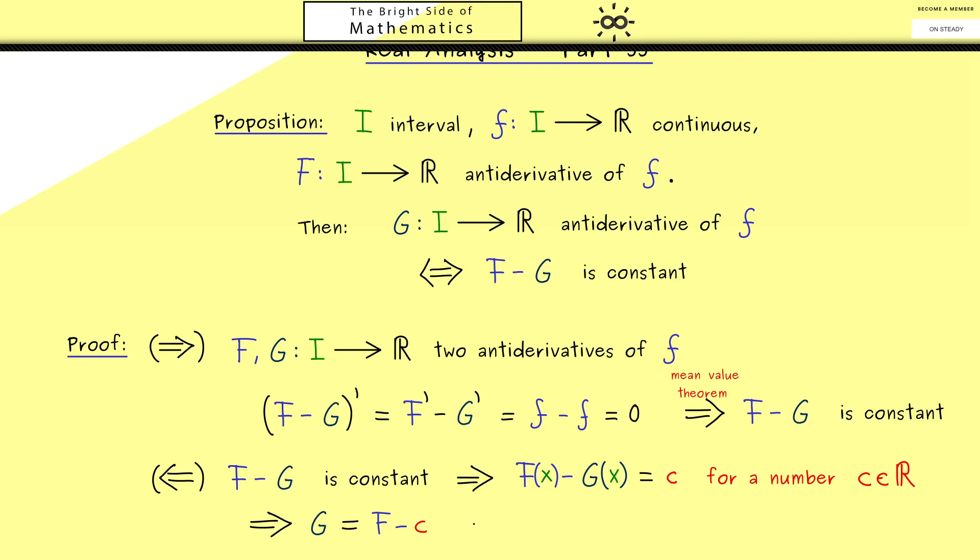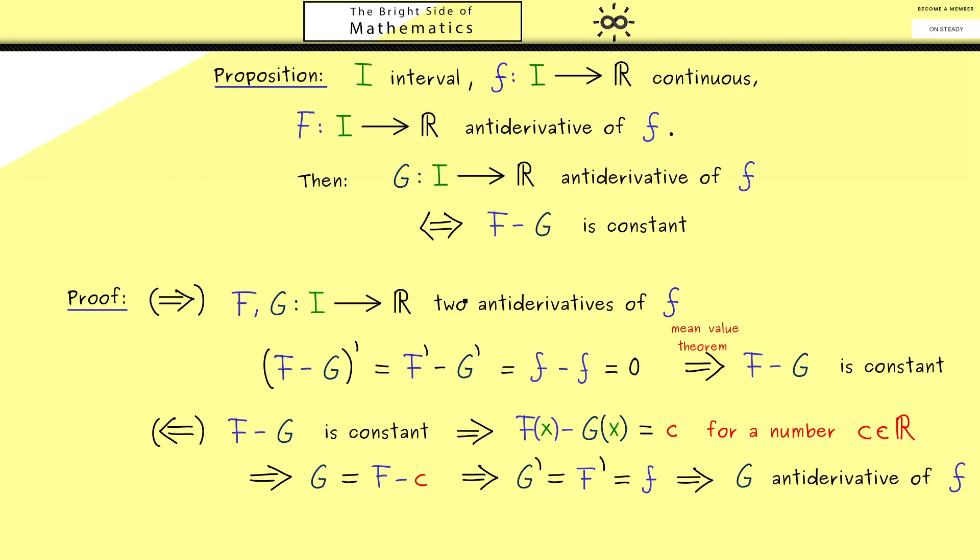And then we conclude we can form the derivative on both sides. However, then of course the constant will vanish on the right-hand side, so it just remains that F prime is equal to lower case f, simply because it's an antiderivative of f. However, this also means that G is an antiderivative of f. And please don't forget, this is exactly what we wanted to show here. So in summary, the whole proof is finished and we have this nice result here.